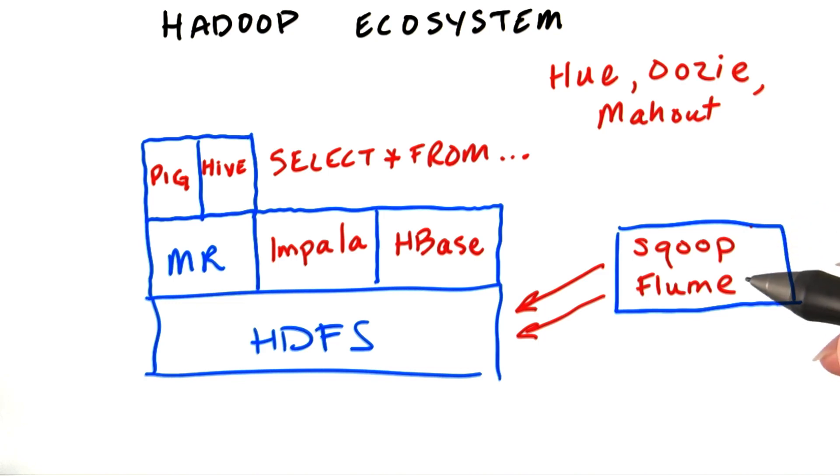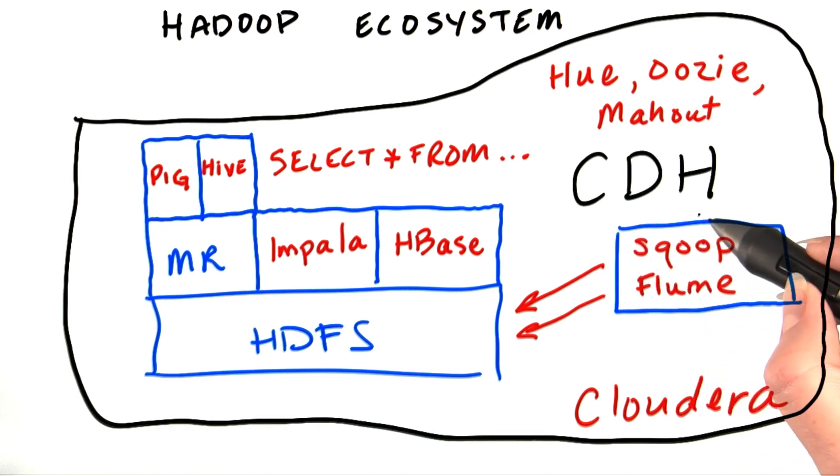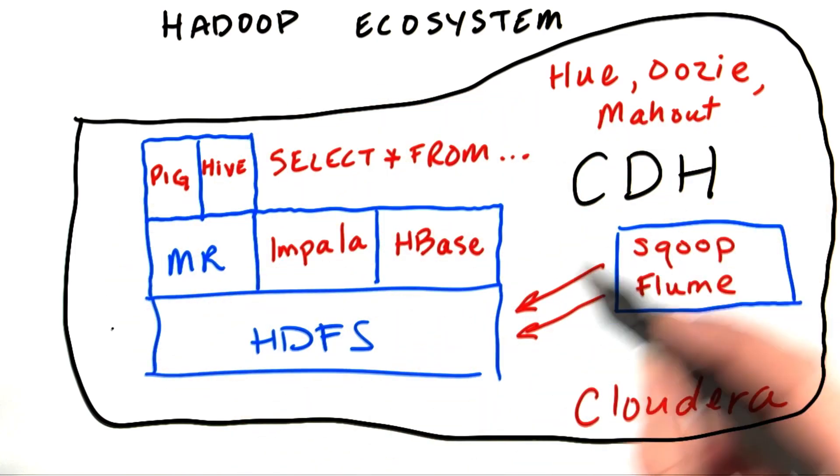To make installing and maintaining a cluster like this easier, Cloudera, the company we work for, has put together a distribution of Hadoop called CDH. CDH, or the Cloudera Distribution including Apache Hadoop, takes all the key ecosystem projects along with Hadoop itself and packages them together so that installation is a really easy process. And the components are all tested together so you can be sure there's no incompatibilities between them.